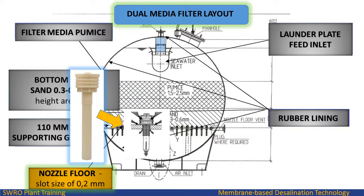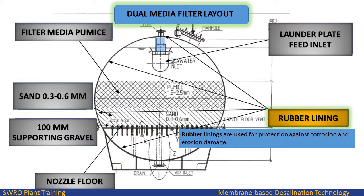In the nozzle floor, nozzles are used with a slot size of 0.2 millimetres. The final filtered water comes from the nozzle output. Rubber linings on the inner surface of the dual media filter vessel are used for protection against corrosion and erosion damage.